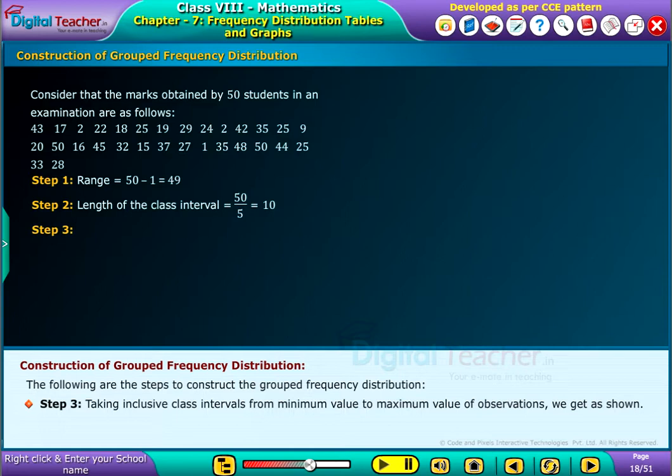Step 3: Taking inclusive class intervals from minimum value to maximum value of observations, we get as shown.